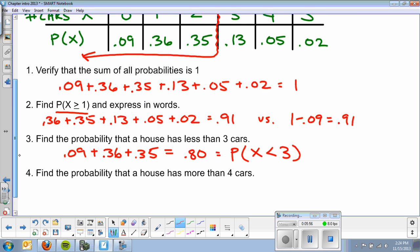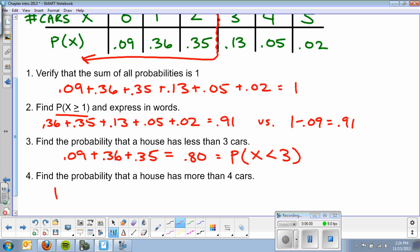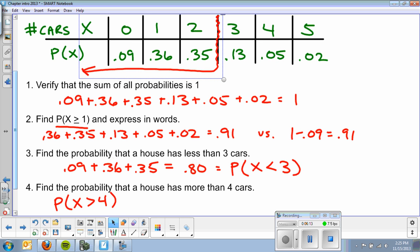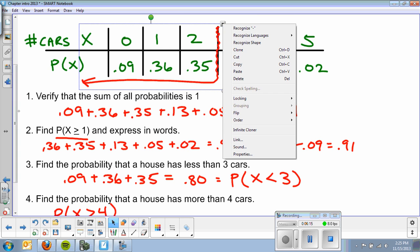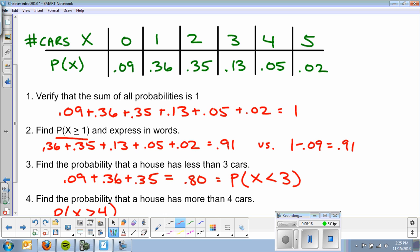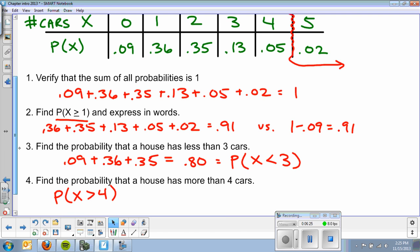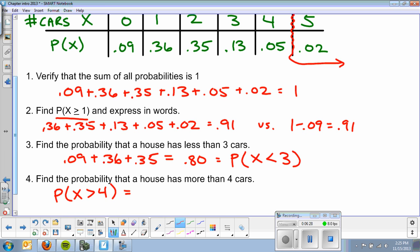Alright. Last one. Find the probability that a house has more than four cars. So, that's the probability that X is greater than four. Again, not including four. And that's where it gets a little tricky. So, more than four. Not including four. So, if I look at my chart, I'm looking for the probability of X being over four. So, I'm not including four. So, that's going to be basically just five. So, that's going to be the probability of a house having five cars. And that's 0.02. Signing out.